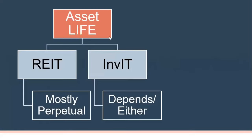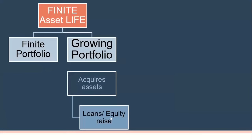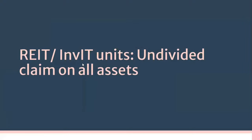In the case of REITs and INVITs in India, asset life for a REIT is mostly perpetual because they hold commercial assets. For INVITs, it depends on how the concession agreement or other agreement is structured. A finite asset life can be classified into two parts: a finite portfolio — say five or seven assets with a 10–15 year life after which the portfolio depletes — and a growing portfolio where you add assets. You can acquire assets via loans or equity raises, and REITs and INVITs have an undivided claim on all assets.